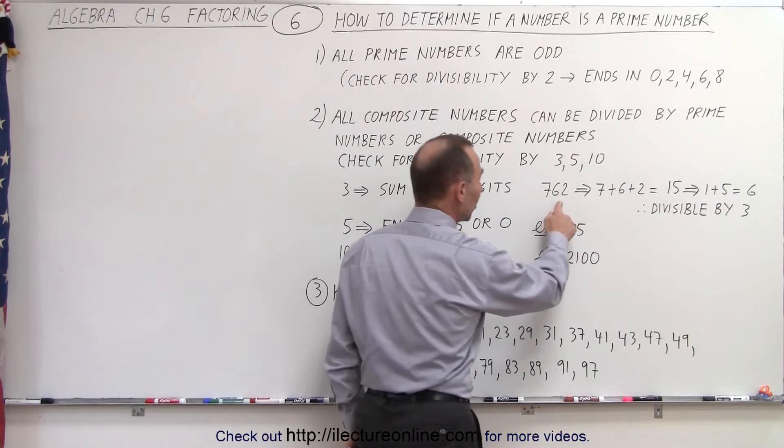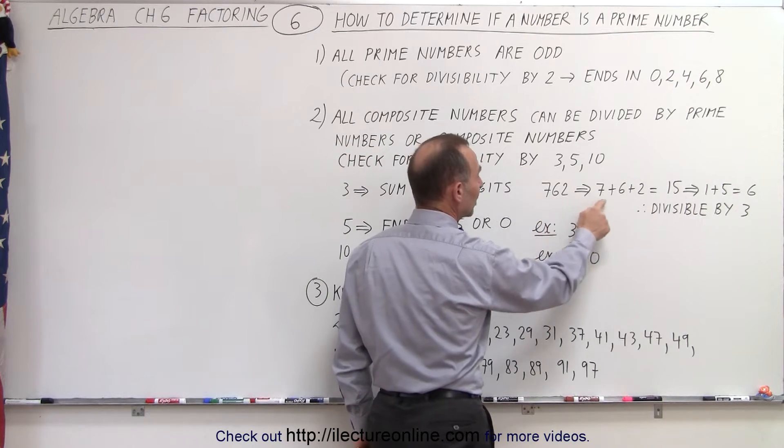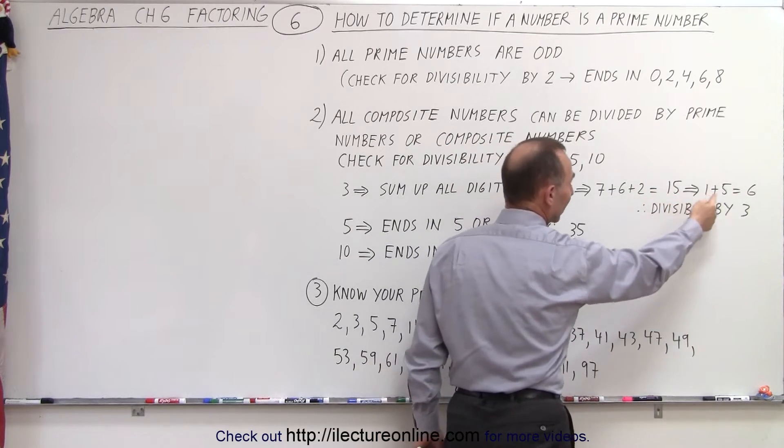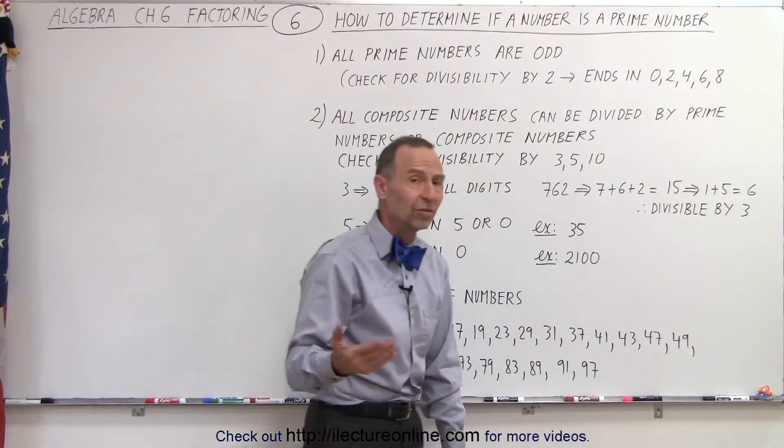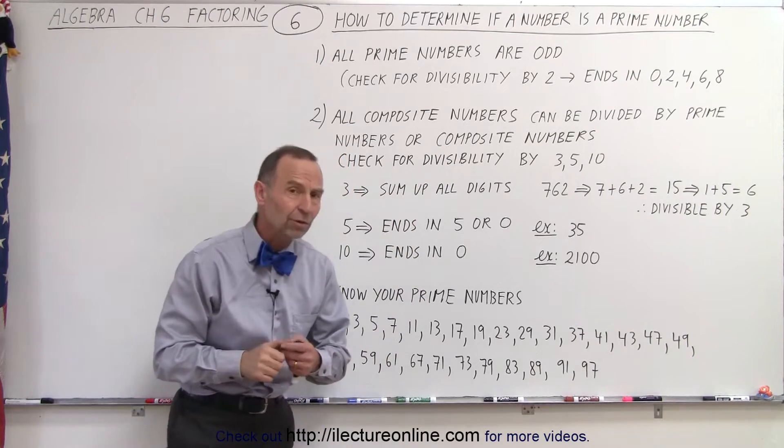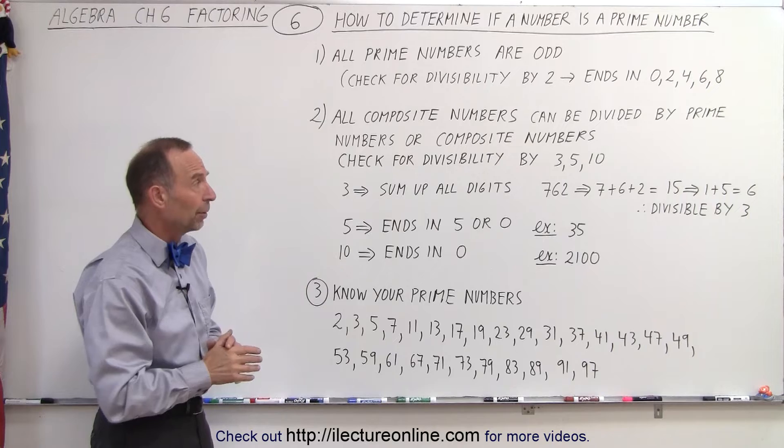For example, the number 762, if we add the three digits together, we get 15. Again, if we add the 1 plus the 5 together, we get 6, and 6 is obviously divisible by 3, which means 762 is divisible by 3, and therefore it's not a prime number.